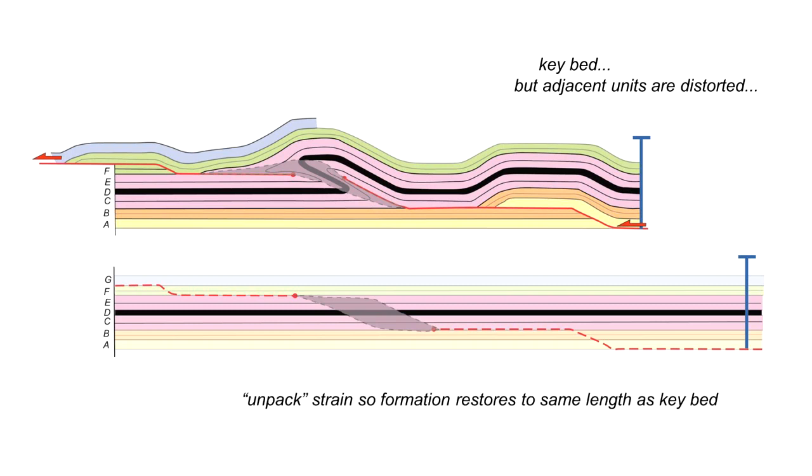So to create a restoration for layers C and E we have to unpack the strain so that these formations restore to the same length as the keybed D.